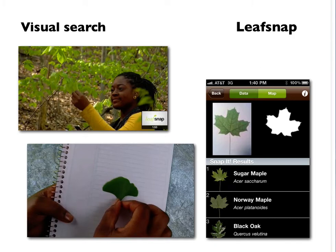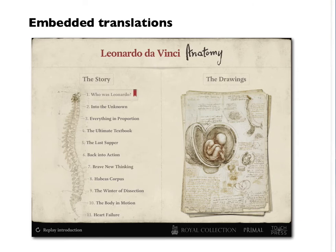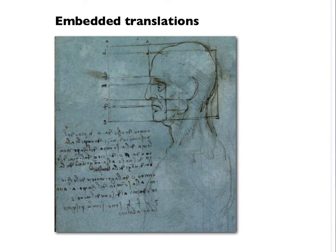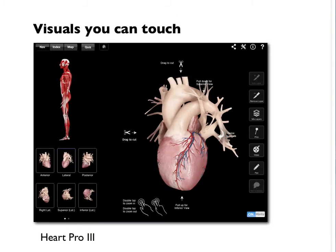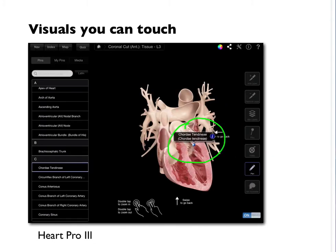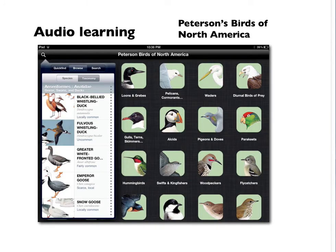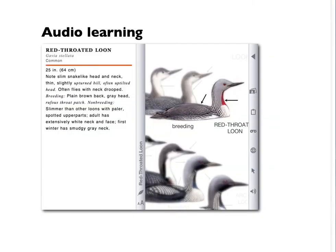In LeafSnap, you can use the camera to do a visual search of different leaves and identify trees. In this Leonardo da Vinci anatomy app, there are embedded translations right on top of the manuscripts, so you can see Leonardo's original writing and tap a button to switch it to English, reading it right within the context of his drawings. There are visuals you can touch, spin around, and slice open — like anatomy apps for medical students where you can drop pins and learn all the scientific names of parts of the human body. There's also audio enabling learning, like in Peterson's Birds of North America, where you can learn all the bird calls in this very large book of bird species.